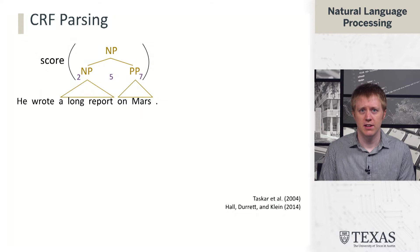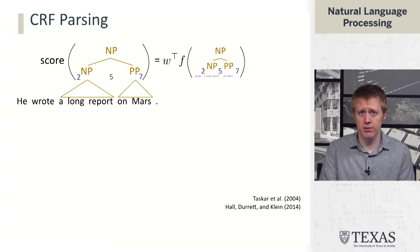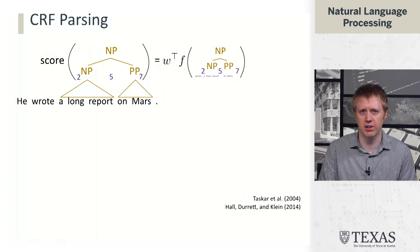We can score the presence of non-terminals or score rules in a way that's anchored to the sentence. This score doesn't just look at the grammar symbols like what was happening in PCFGs, but it can look at a whole bunch of information — the grammar symbols, the sentence, and the indices that these grammar symbols are anchored to in the sentence, like all the different words underneath a particular noun phrase.